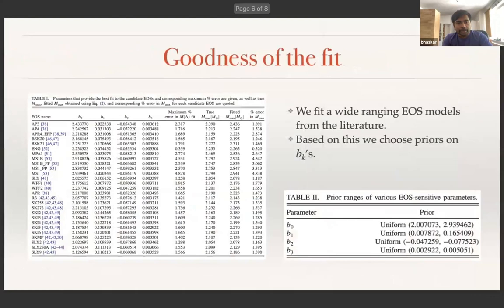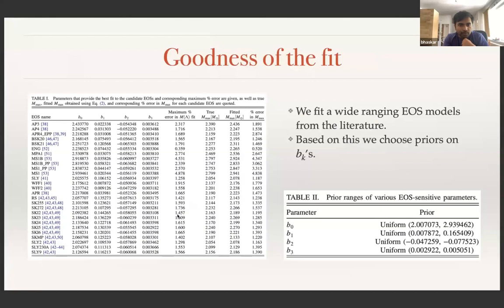One thing we need is the prior on these parameters. To get the prior, we fit a wide range of equation of state models taken from the literature. The names of the equations of state we consider are shown in this table, along with their corresponding fitted parameters. The maximum error in fitting is given in the last column—for most cases the error is of the order of 1%, and in some cases 4%, mostly for stiff equations of state. From this, we obtain the prior ranges of the parameters and take all parameters to be uniform.